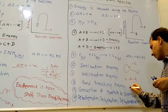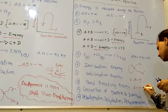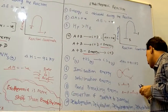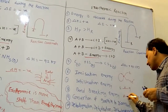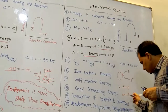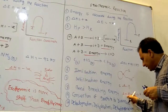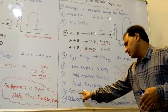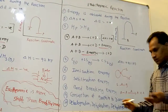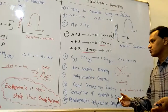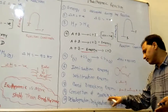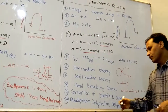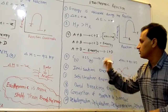Bond breaking is endothermic — to break a bond, heat is absorbed. Conversion between allotropes, such as graphite to diamond, is a heat of transition — the allotrope conversion absorbs heat, so transition of allotropes is also endothermic.